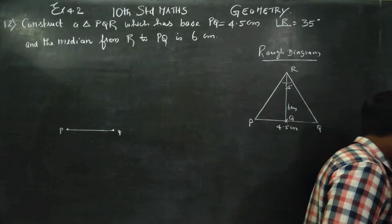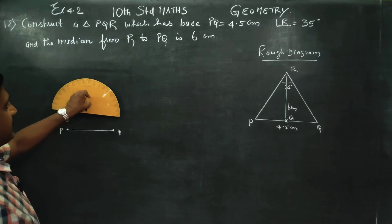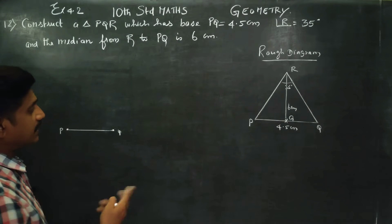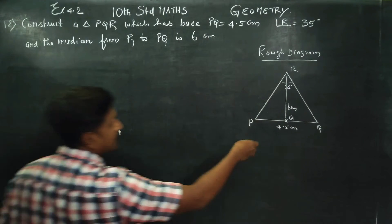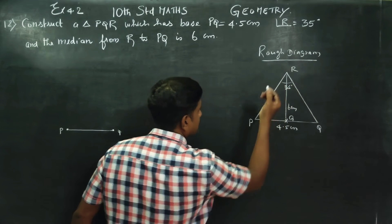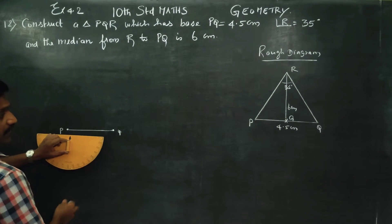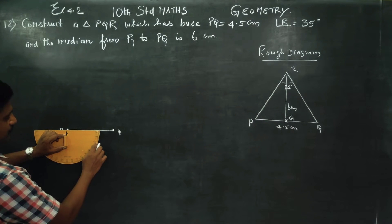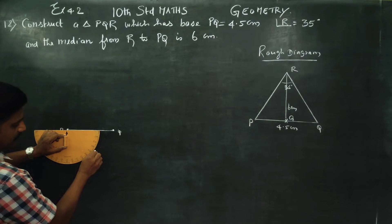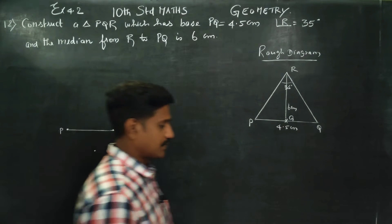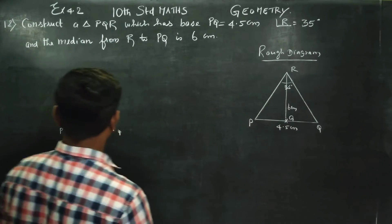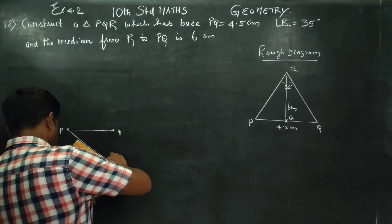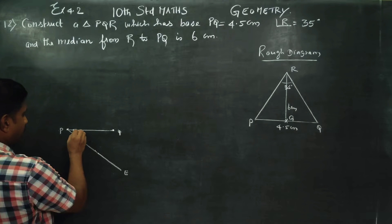After drawing PQ, use the protractor to mark 35 degrees. Place the protractor and read: 0, 10, 20, 30, 40 — between 30 and 40 is the 35-degree point. Mark that point and join it to form an angle of 35 degrees. If you join this line, you will get an angle of 35 degrees.